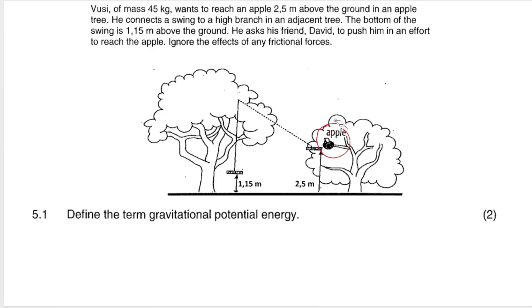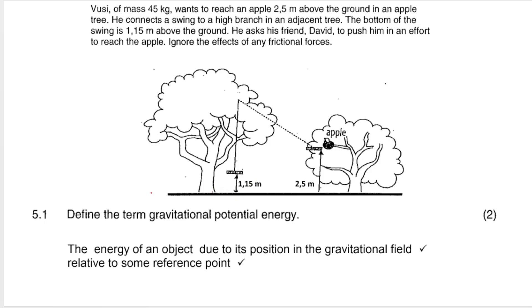We assume we are dealing with an isolated system. The first question is a definition — definitions are very important and you need to get them correct word for word. Define the term gravitational potential energy. The formula for gravitational potential energy is Ep = mgh, and potential energy depends on height. The definition is: the energy of an object due to its position in the gravitational field.